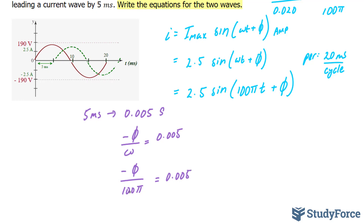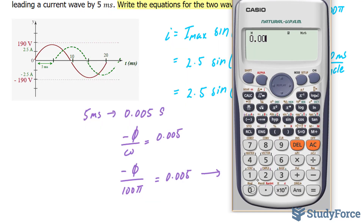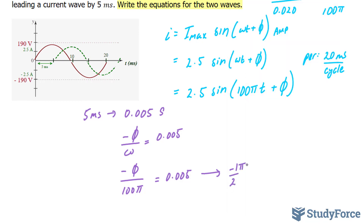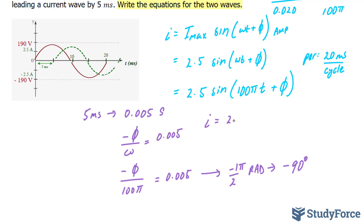Multiplying both sides by 100 pi and then dividing both sides by negative 1 gives us negative 1 over 2 pi — that's in radians. To convert this into degrees, we use a conversion ratio, and we end up with negative 90 degrees. Therefore, phi equals negative 90 degrees or negative pi over 2. Our final current equation becomes i equals 2.5 sine of 100 pi t minus 90 degrees, or equivalently with minus pi over 2.